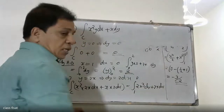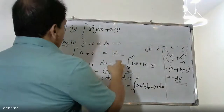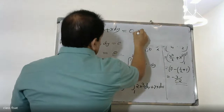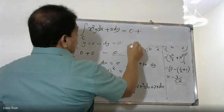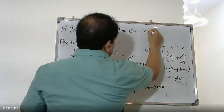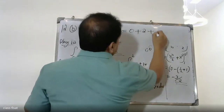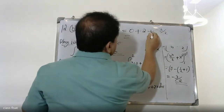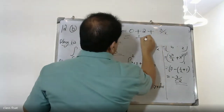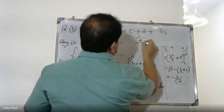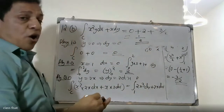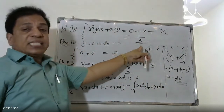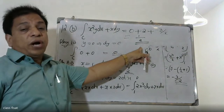This is equal to 0 plus 2 plus minus 3. The integral over c of x squared y dx plus x dy equals 3.